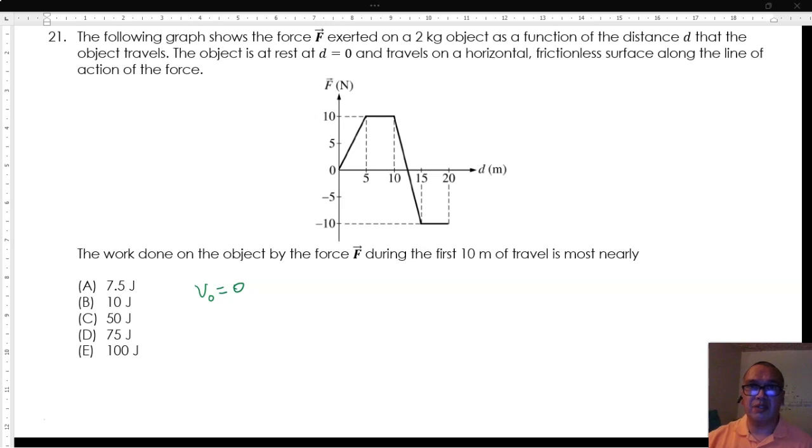The work done on the object by the force f during the first 10 meters of travel is most nearly. This is a graph of force versus position.